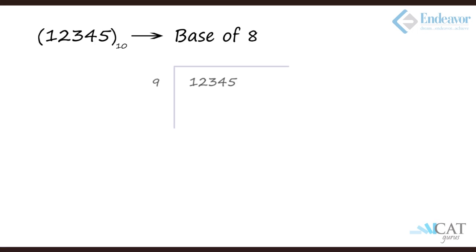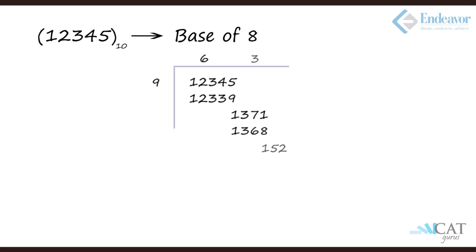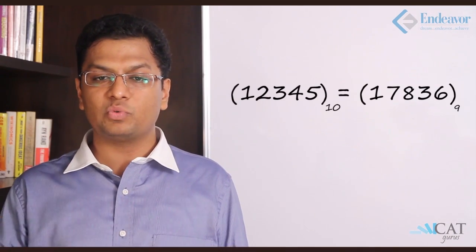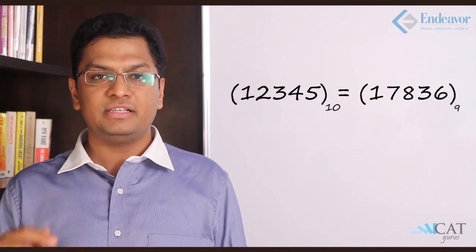Now let's convert 12345 into base 9. Using the same division method: 12339 is the largest multiple of 9 below 12345, giving quotient 1371 and remainder 6. Continuing: 1368 is next, giving quotient 152 and remainder 3; then quotient 16 and remainder 8. The remainders collected are 6, 3, 8, 7, 1 — reversed, this gives 17836 in base 9, which equals 12345 in decimal.